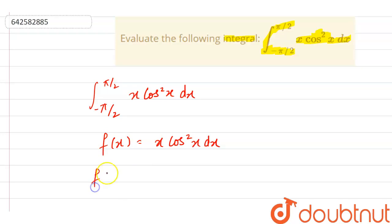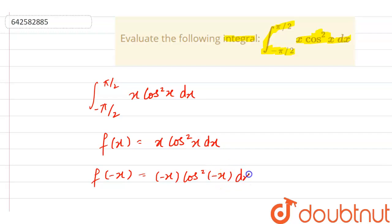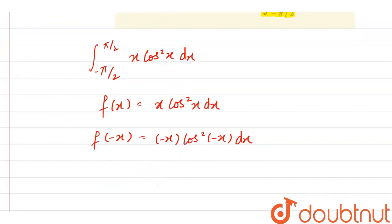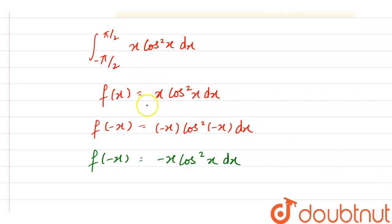Our function f(x) is x cos squared x. Now let's find f(−x). We have to put minus x in place of x, giving us minus x times cos squared of minus x. Since cos squared(−x) equals cos squared(x), we get f(−x) equals minus x cos squared x.